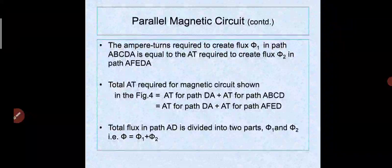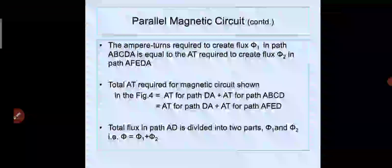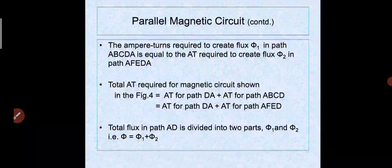The total ampere turns required for the magnetic circuit equals ampere turns for path DA plus ampere turns for path ABCD, or ampere turns for path DA plus ampere turns for path AFED. The total flux in the central limb path AD divides into two parts φ1 and φ2, so φ equals φ1 plus φ2.